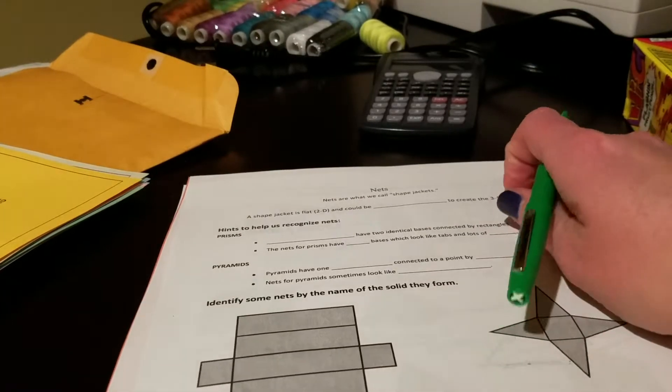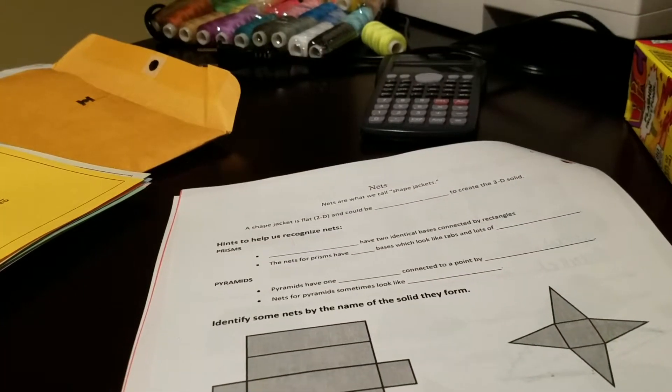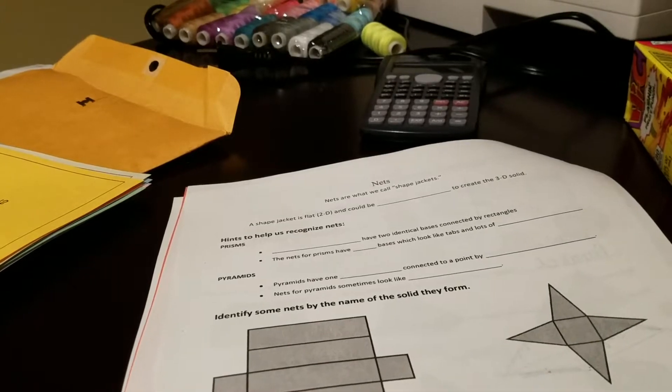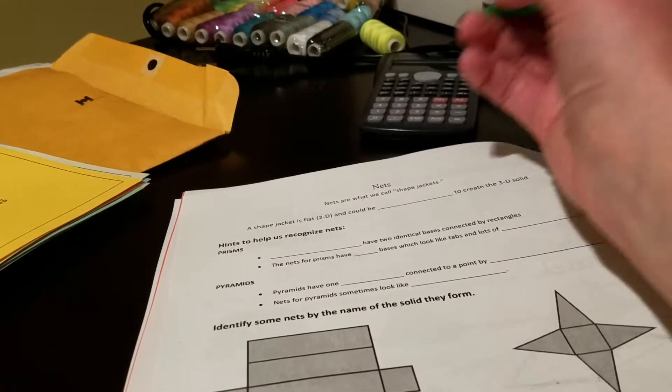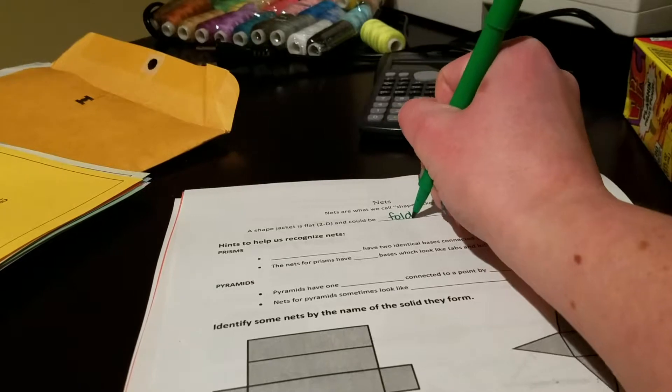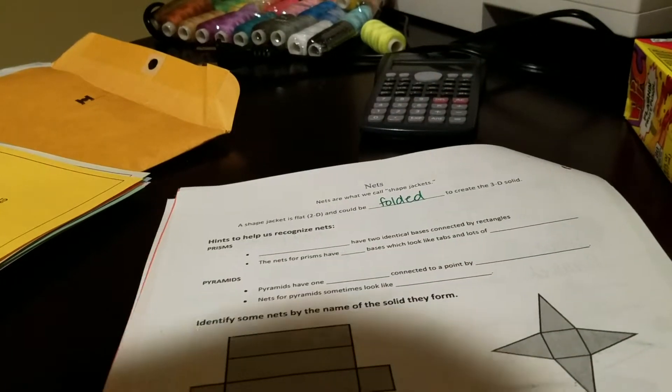All right, our next lesson here is about nets. So nets are what I can technically call shape jackets. Nets are flat, two-dimensional, and can actually be folded to create their 3D solid.